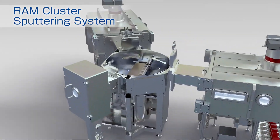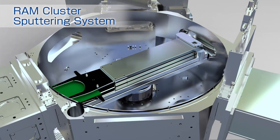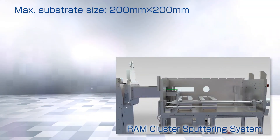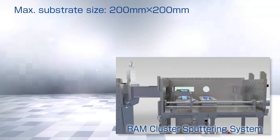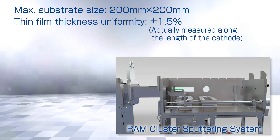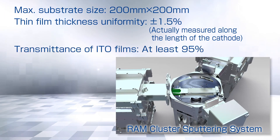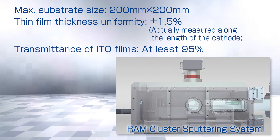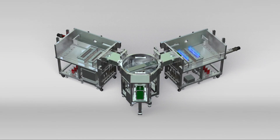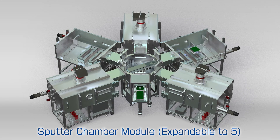The RAM cluster is a cluster-type sputtering system equipped with RAM cathodes. The maximum substrate size is 200 millimeters by 200 millimeters. The thin film thickness uniformity is plus or minus 1.5 percent, and the transmittance of ITO films is no less than 95 percent.